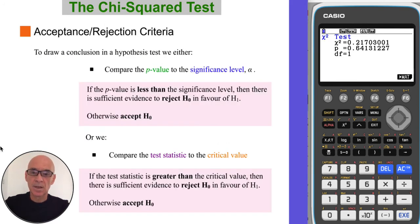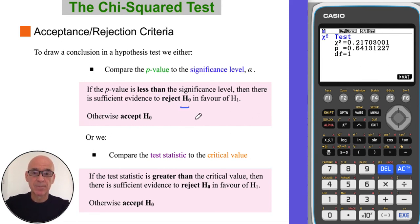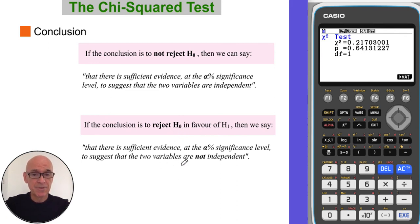There are two ways to make a conclusion: either compare the p-value to the significance level, or compare the test statistic to the critical value if it's given in the question. If the p-value is less than the significance level, there is sufficient evidence to reject the null hypothesis. Similarly, if the test statistic is greater than the critical value, there is sufficient evidence to reject the null hypothesis. If we do not reject the null hypothesis, we write that there is sufficient evidence at that level of significance to suggest the two variables are independent. If we reject the null hypothesis, we say there is sufficient evidence to suggest the two variables are not independent.